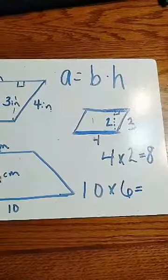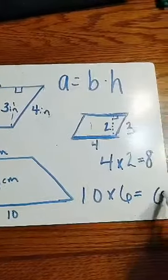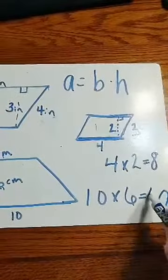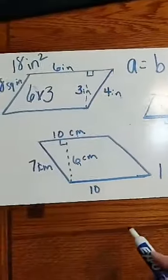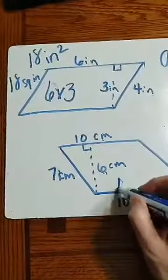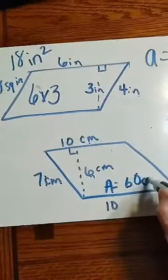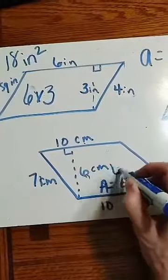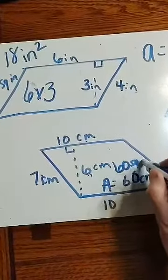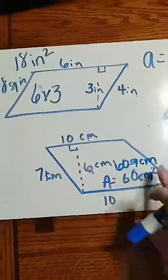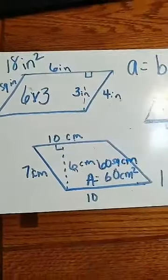10 times 6? Well, this is an easy one. You're right. We put the 0. We take 6 times 1? 6. Oh, we need a label. Okay, so our area is 60 centimeters squared or 60 square centimeters. Either way to label it is fine. As long as it has that square in it.